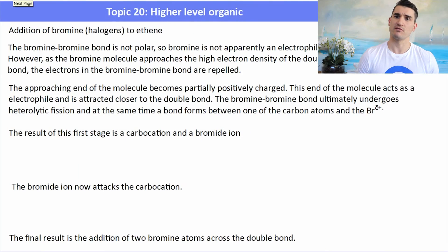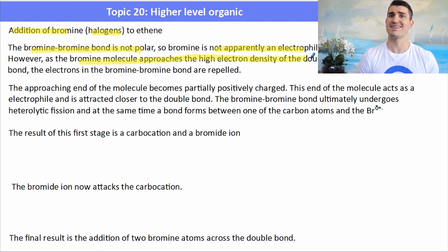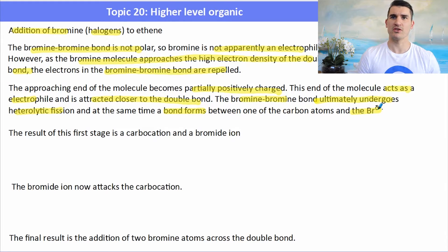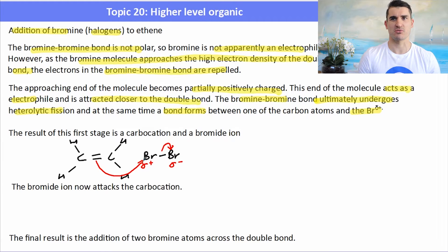The second example is the addition of bromine to ethene. The bromine–bromine bond is not polar, so it's not apparently an electrophile. However, as the bromine gets close to the double bond it starts to become charged: one end becomes positive and one end becomes negative. That's the heterolytic fission of the bond, and we form our electrophile, the Br⁺ ion. Here we have our ethene with its carbon-to-carbon double bond, and the bromine undergoes heterolytic fission so the electrons are attracted to the positively charged bromide ion.